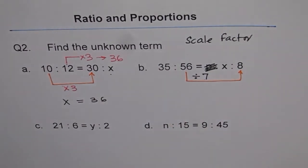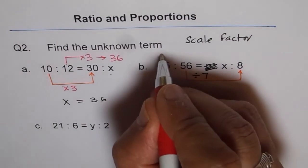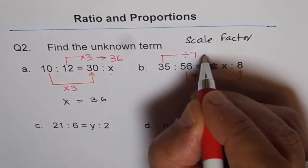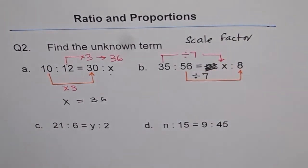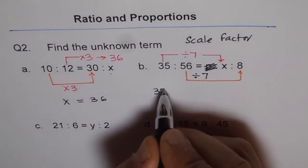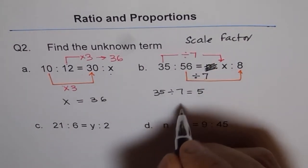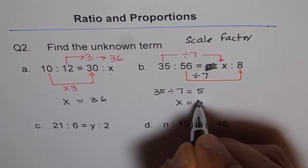Now we will do the same operation on 35. So what are we going to do? We are going to divide 35 by 7 to get x. So 35 divided by 7 is 5. And therefore, x is equals to 5.